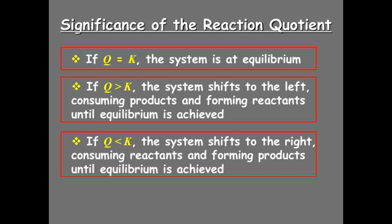The opposite situation, if the Q is less than K, that means you don't have enough products to truly have an equilibrium system. So the system will shift to the right and it will make more products, which will then increase the Q up to the value of K. These are basically the three situations in determining shifts within an equilibrium system based on the value of the reaction quotient compared to the equilibrium constant.